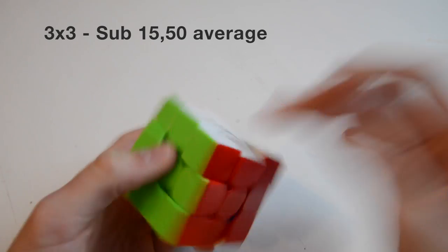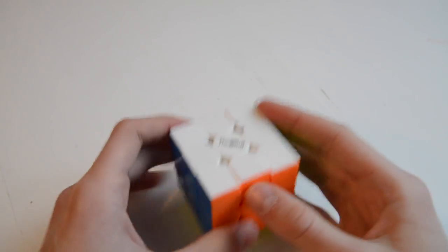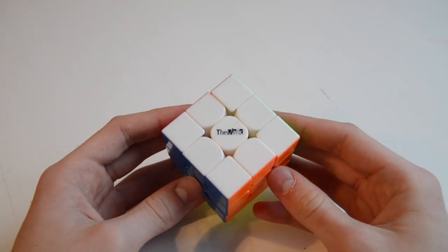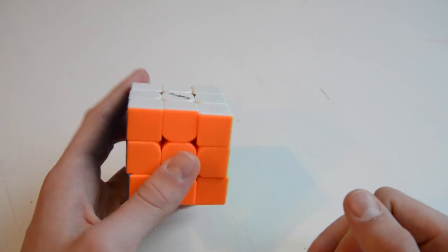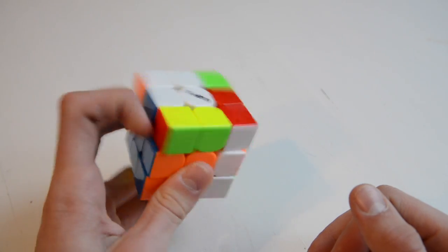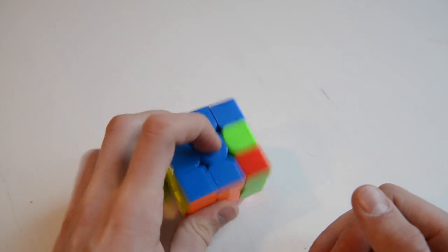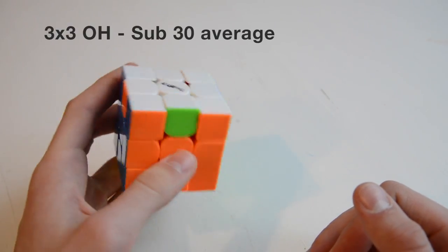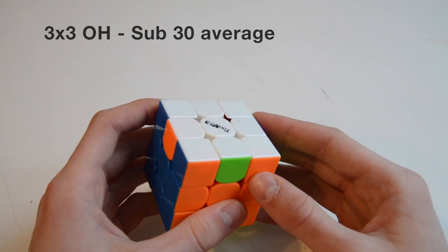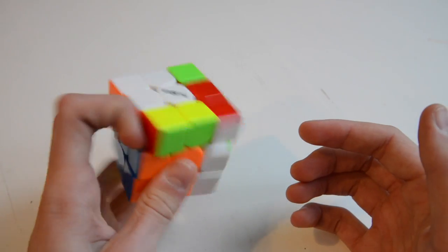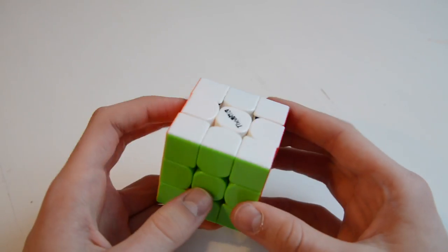For 3x3 blindfolded, I have trained a lot, so I can't wait to do some solves in the competition. Next up, one-handed. I'll be using the same cube, the new Valk, and my goal is to get sub-30 average. It's going to be hard. We'll see how it goes.